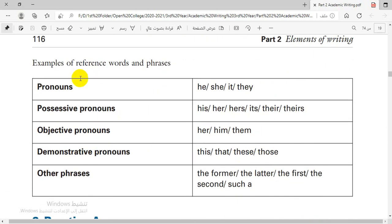Examples of reference words and phrases. For example, pronouns like he, she, it, they, these are reference words. Possessive pronouns like his, her, hers. Objective pronouns like her, him, them. Demonstrative pronouns like this, that, these, those, and other phrases like the former, the latter, the first, the second, such as.